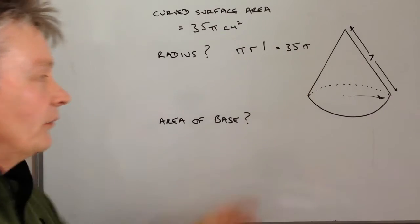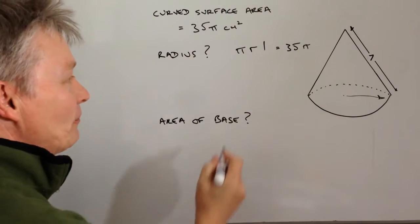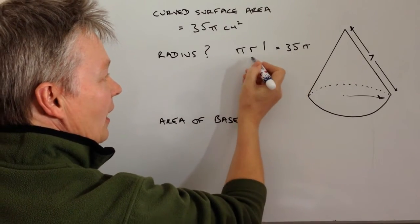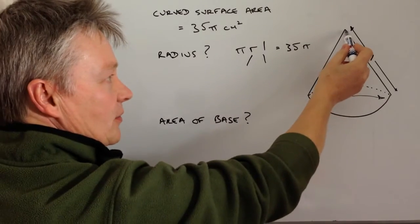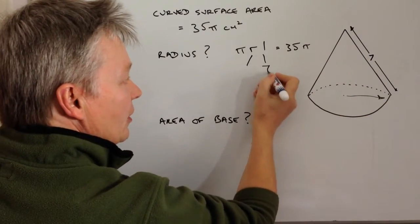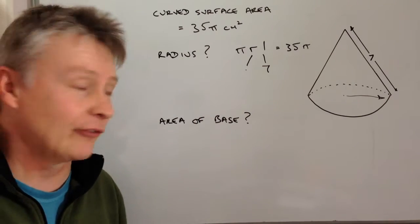Well the π is okay, I can handle that no problem because it's not changed at all. 35 here is made up of these two components, one of which is the slant height, which is 7, which is fine, and the other of which is the radius, which is the information that we're actually looking for.